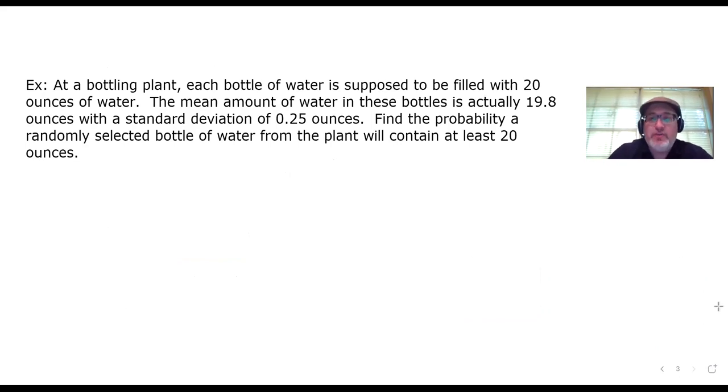At a bottling plant, each bottle of water is supposed to be filled with 20 ounces of water. The mean amount of water in these bottles is actually 19.8 ounces with a standard deviation of 0.25 ounces. Find the probability a randomly selected bottle of water from the plant will contain at least 20 ounces. Why at least 20? Because as the consumer, if you buy a bottle of water and it contains 20 ounces or more, you're good. But if it were less than 20 ounces, then you might go, wait a minute, I paid for 20 ounces, but you didn't sell me 20 ounces.